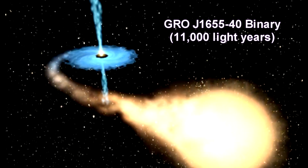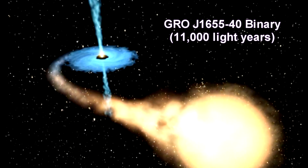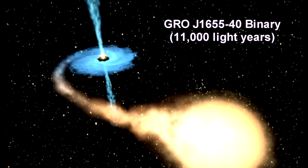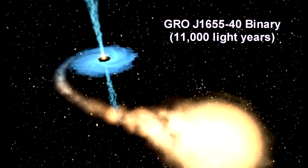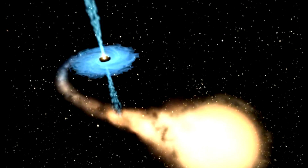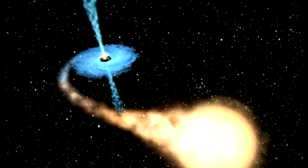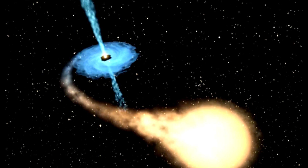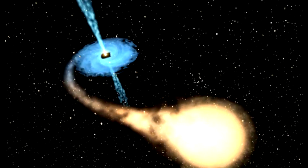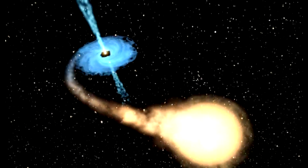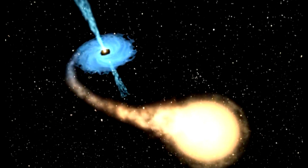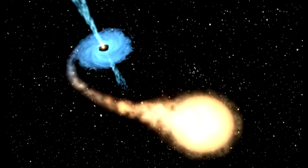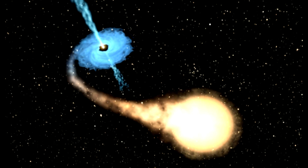GRO J1655-40, or J1655 for short, is a binary star system consisting of an evolving primary star and a massive, unseen companion. They orbit each other every 2.6 days.